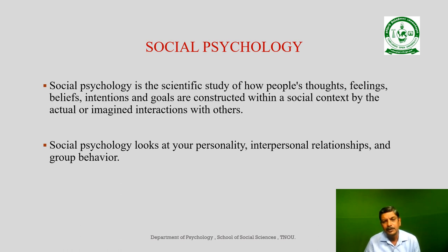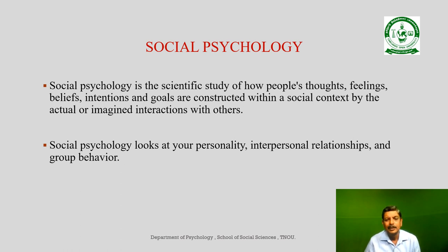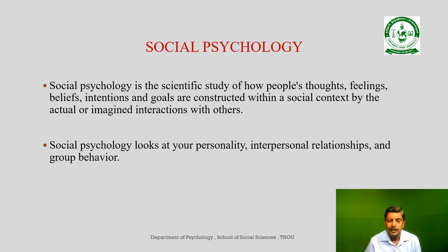There are so many concepts and processes involved in this interaction to make it an ideal situation for an individual to lead a happy life. Social psychology looks at your personality, interpersonal relationship, and group behavior. These are the major components or pillars of social psychology. Personality refers to your makeup; interpersonal relationship refers to how well you interact, what is your equation, how well you can influence other people or other people can influence you. Every individual is unique and the very same person will behave differently at different times.